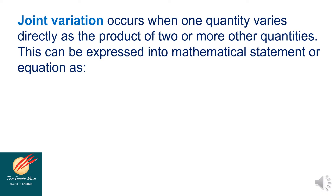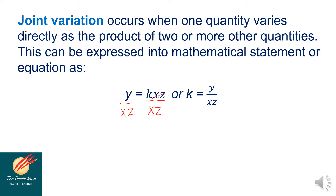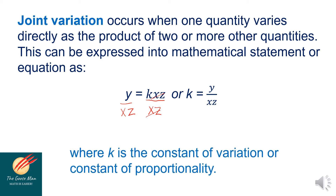Joint variation occurs when one quantity varies directly as the product of two or more quantities. This can be expressed as a mathematical equation: y is equal to k times xz, or k is equal to y all over xz. Dividing both sides by xz, the constant k is equal to y all over xz. Remember that k is the constant of variation or constant of proportionality.